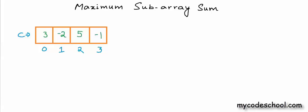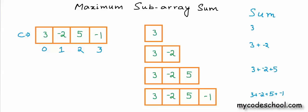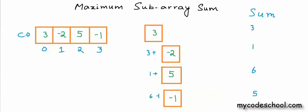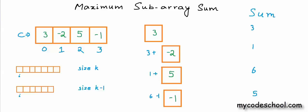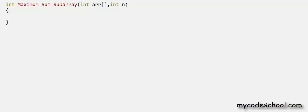Now we can see how we can improve our algorithm by reducing computations using previously calculated values or by changing the order of operations. When we considered subarrays starting at the same index, we were calculating the sum from the start separately for each subarray. But if you notice, the sum of each of these subarrays is its previous sum plus the last element of the subarray. That is, to calculate the sum of the subarray of size k, we take the sum of the subarray of size k-1 at index i and add the last element to it. For each subarray of size k, we will be saving k-1 iterations every time, saving valuable computation time.